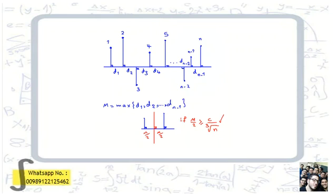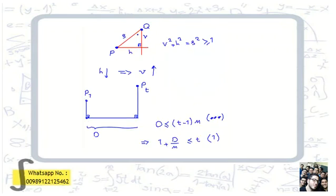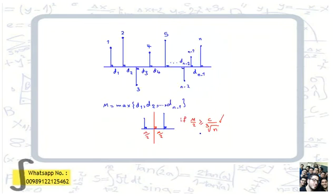Let big M be the maximum of d1 to d_{n-1}. If we prove that M over 2 is greater than or equal to a constant C over n to the one-third, then we can prove the problem, because we can draw a line perpendicular to L and the distance of all points from this line would be at least M over 2. We know from the assumption that the distance between each two points is at least 1, so v squared plus h squared equals s squared is at least 1. If we decrease h, then v increases.